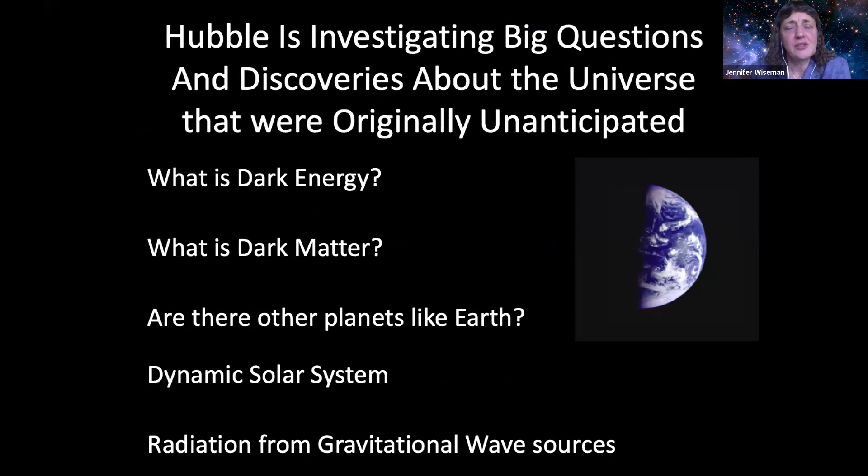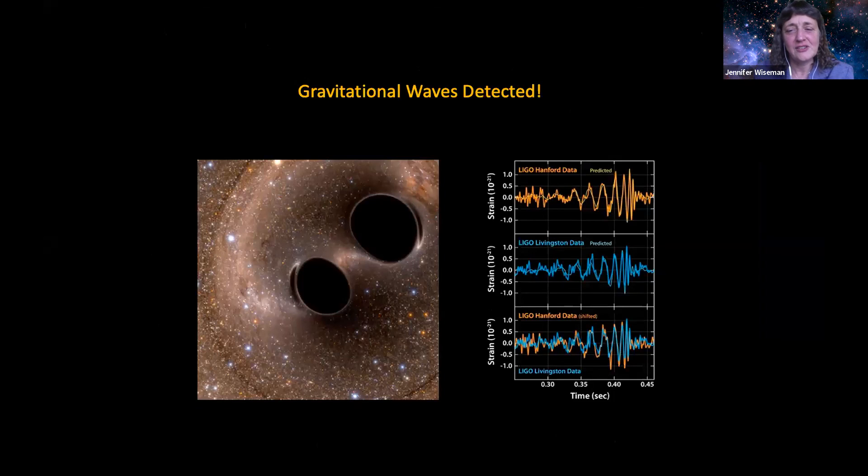Those were many of those things I just mentioned were things expected with Hubble with the exception of the accelerating universe. But Hubble is also investigating big questions now and discoveries about the universe, making discoveries now that were originally unanticipated. Hubble is addressing for example questions like what is dark energy? What is it that's causing the acceleration of the expansion of the universe? What is dark matter and where is it? Are there planets like Earth orbiting other stars? What are the dynamics of our solar system that we didn't expect? And can we actually see radiation from the sources of gravitational waves? I'll mention a few of these. Let's start with the last one.